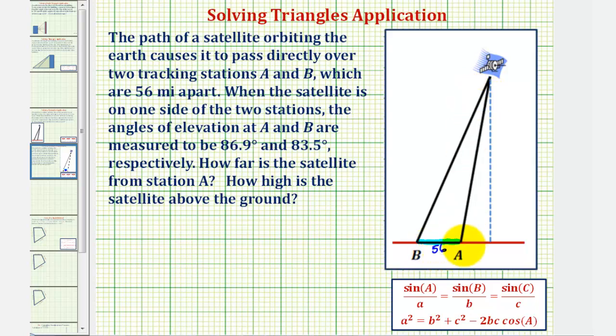The angle of elevations from station A and station B, which should be this angle and this angle, are given as 86.9 degrees and 83.5 degrees. Our goal is to determine how far the satellite is from station A, which should be the length of this segment or this side of a triangle, and also how high the satellite is above the ground, which should be the length of this side or this segment here.